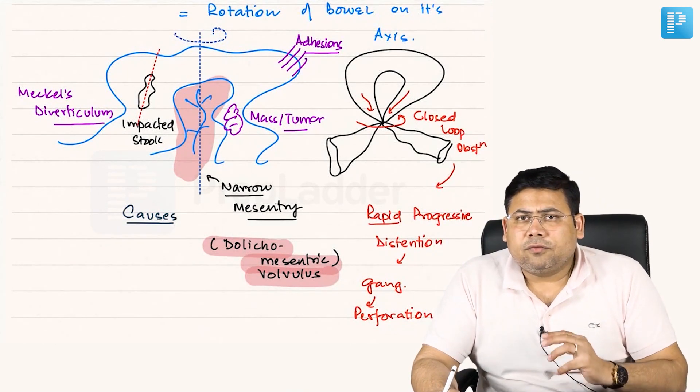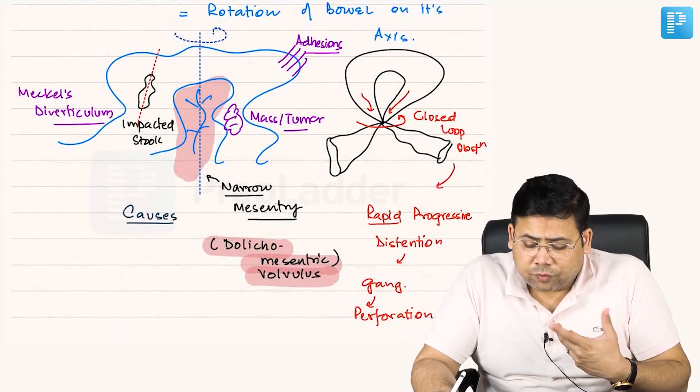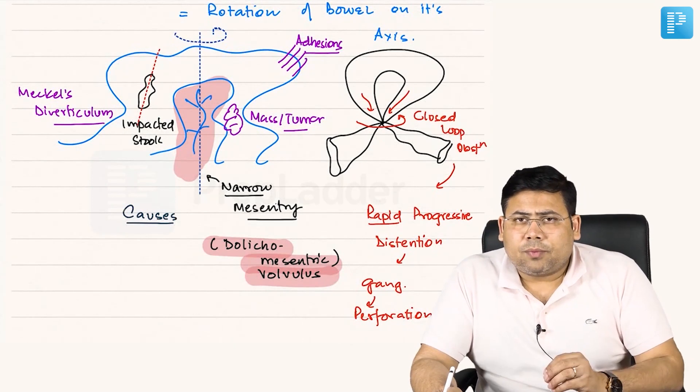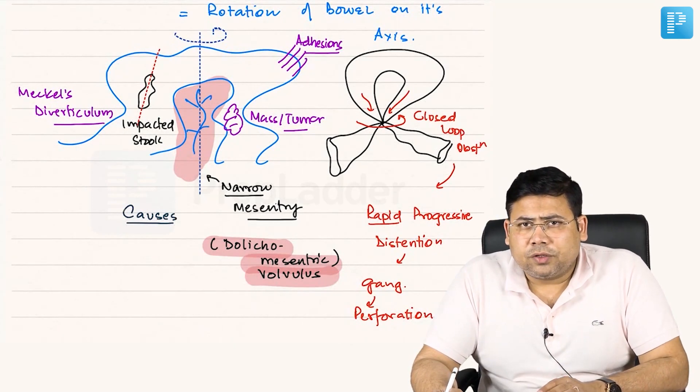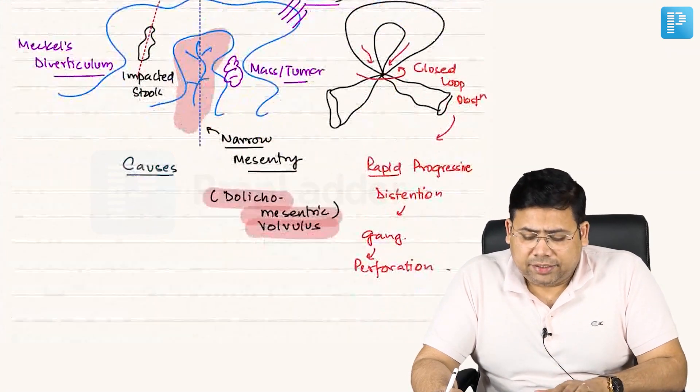Let us try to understand what are the types of volvulus. When we talk about the concept of rotation in a volvulus, there are two types of rotation. It could be a clockwise or it could be an anti-clockwise rotation.